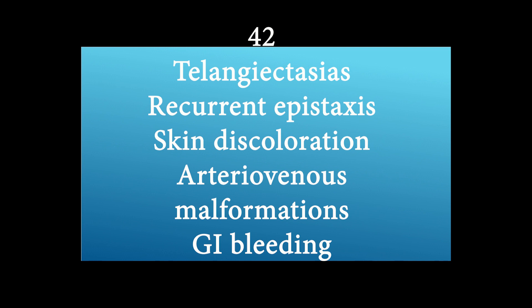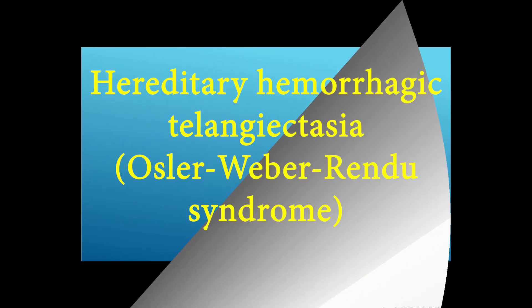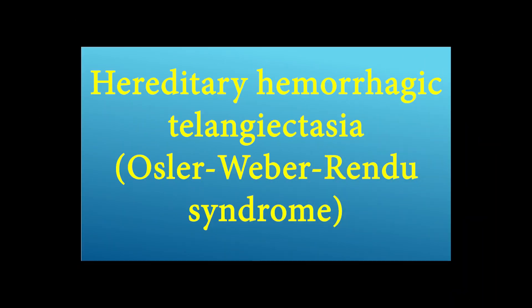Telangiectasias, recurrent epistaxis, skin discoloration, arteriovenous malformations, and GI bleeding — what is the diagnosis? It's called Osler-Weber-Rendu syndrome, also known as hereditary hemorrhagic telangiectasia.